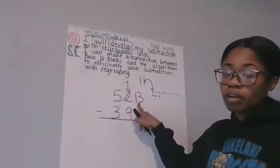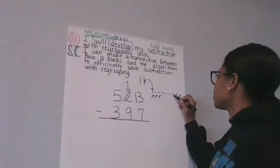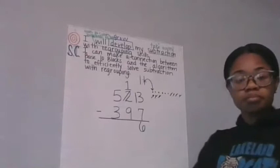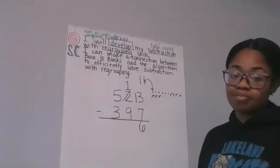All right, so let's put in the work. Thirteen minus seven equals, one, two, three, four, five, six, seven. Taking away that seven, and I'm left with one, two, three, four, five, six. There's my six. The ones place is ready.